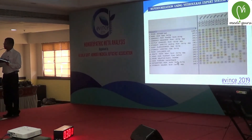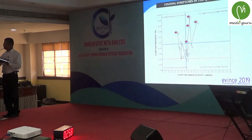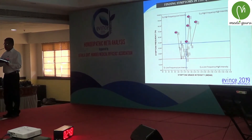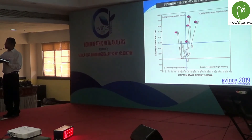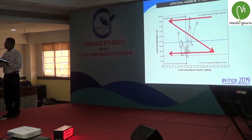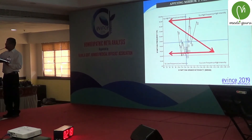The 15 symptoms were used for repertorization. Finding symptoms in quadrants: the quadrant graph is divided into 4 quadrants. This is used to give more importance to the more significant symptoms. Importance is given to Q3 — high frequency and high intensity — then Q2 — high frequency and low intensity. Applying the Mirror Z Principle, more importance is given to symptoms present in Quadrant 3, then Quadrant 2, and if there is a tie or equal marks, Quadrant 4 is considered.